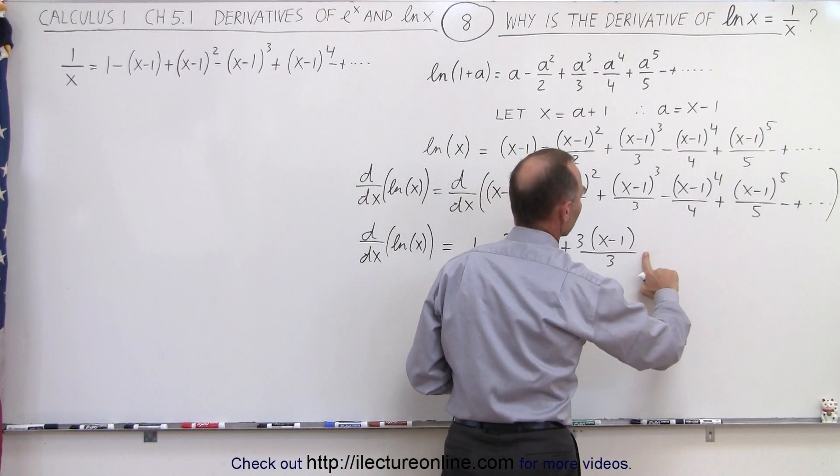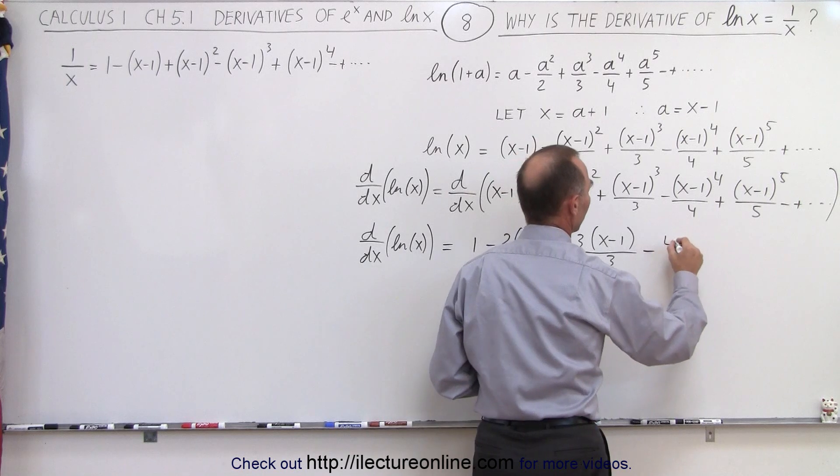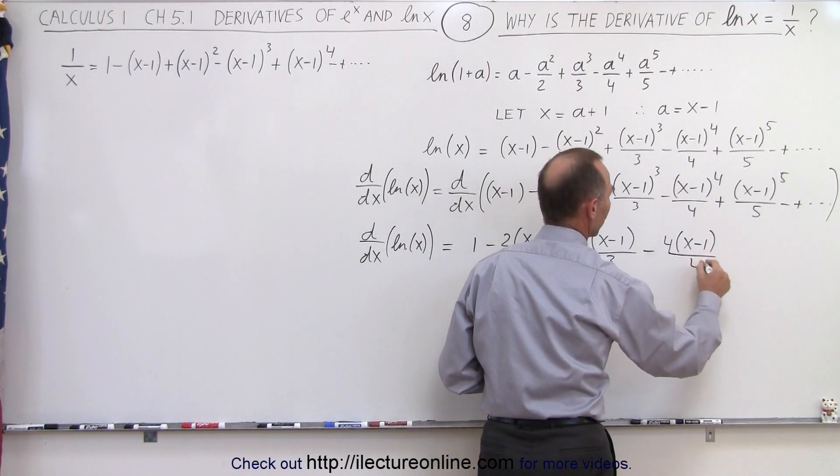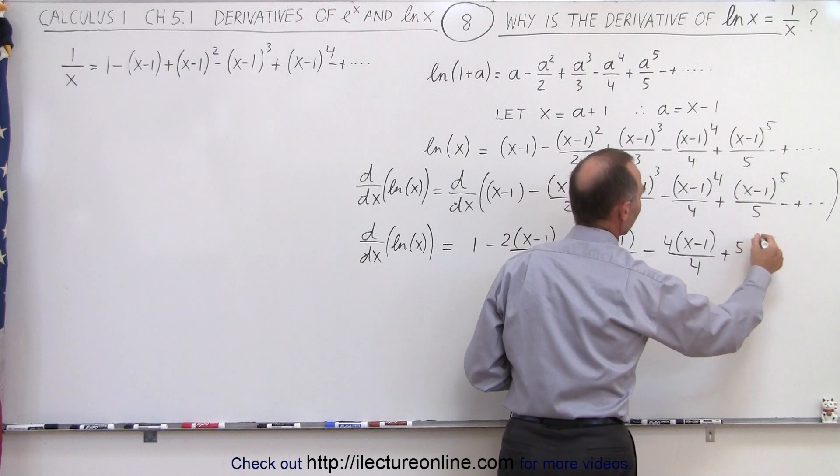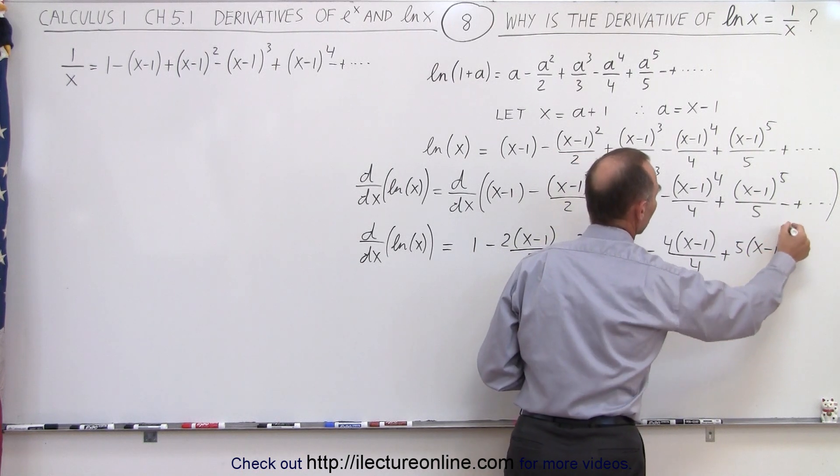And that should be a minus, so minus 4 times x minus 1 divided by 4, and plus 5 times x minus 1 to the 4th.